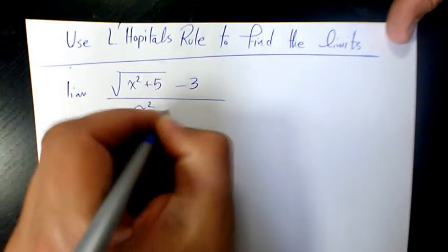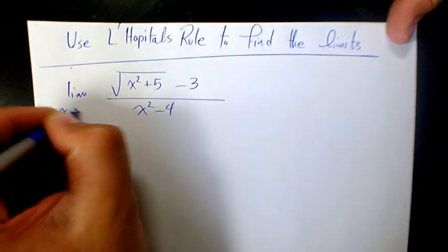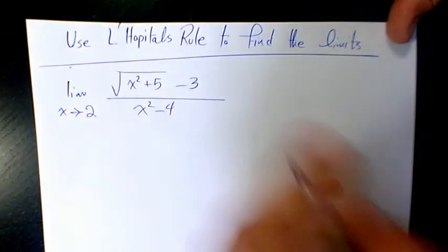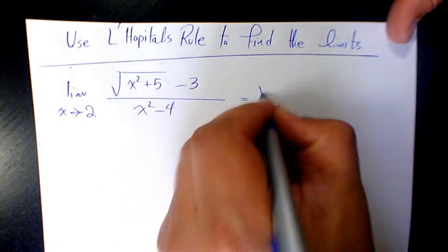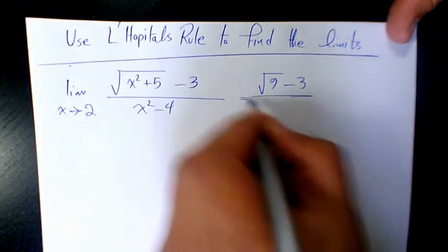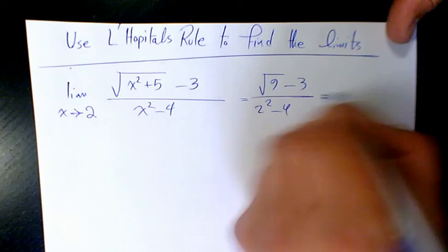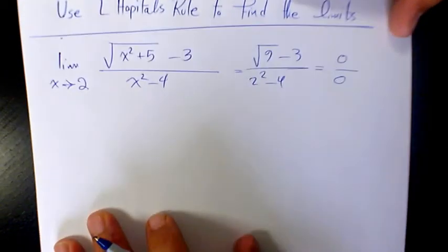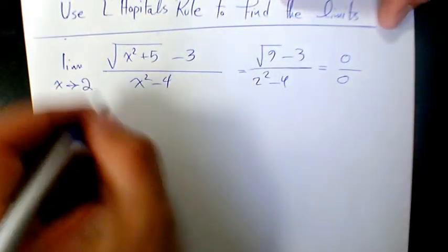over x squared minus four when x is approaching two. When you substitute in, there is going to be root nine minus three over two squared minus four. That's going to be zero over zero, so we can use L'Hôpital's rule.